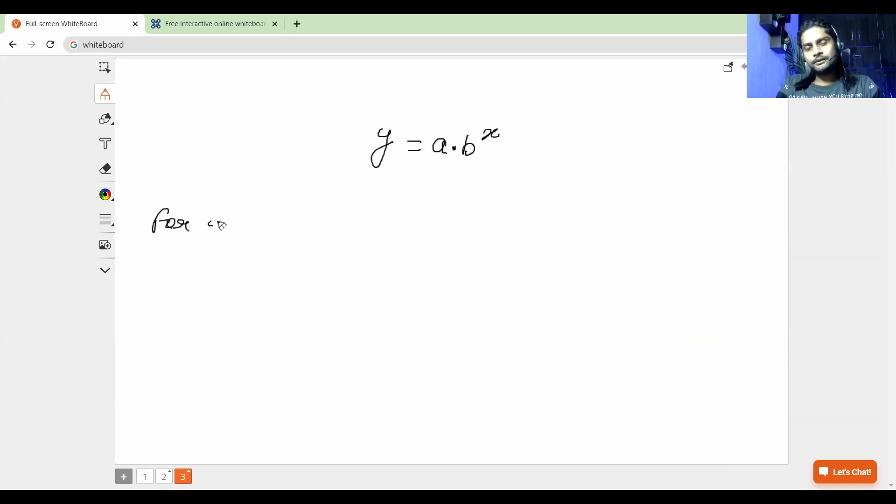To get the y-intercept, students, whenever you have to get the y-intercept, it's not only this function. You have any function, right? And you want to get y-intercept. To do one thing, just put x = 0. What do you have to put? x = 0. As soon as you put x = 0 in the function, let's see what happens. Can anybody tell me what is b raised to the power of 0?